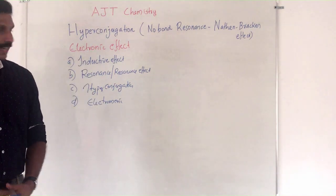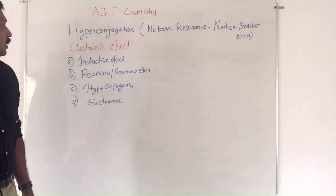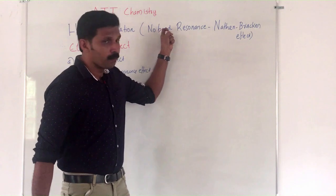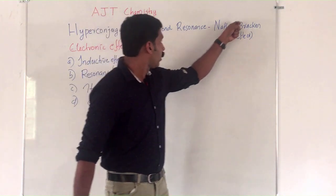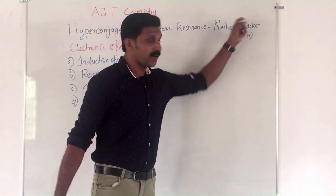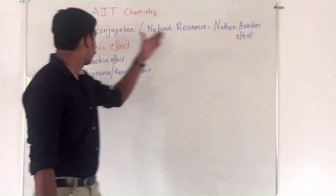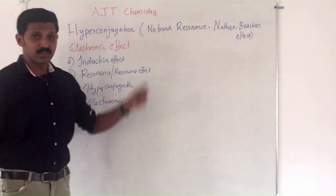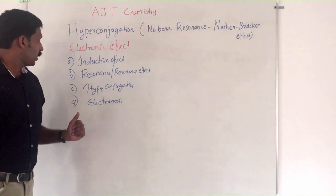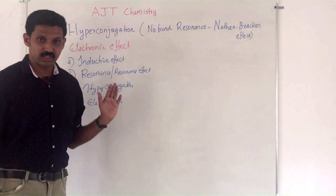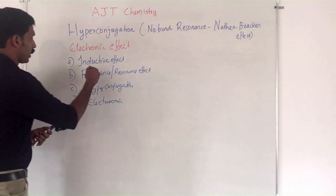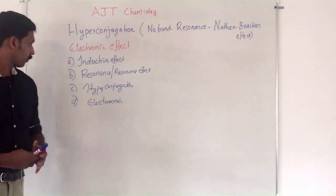Dear friends and students, today we are going to discuss about hyper conjugation or no bond resonance. It is also known as the Baker-Nathan effect, named after the scientists who discovered this phenomenon. You will study this in general organic chemistry. In general organic chemistry, you are familiar with electronic effects — there are four electronic effects: inductive effect, resonance effect, hyper conjugation, and electromeric effect.